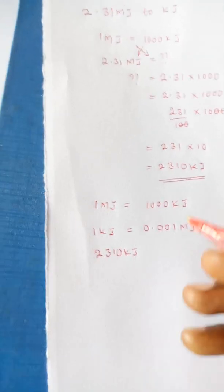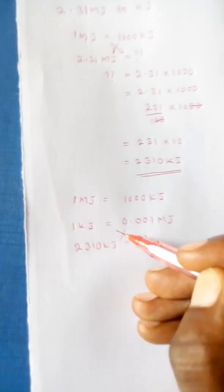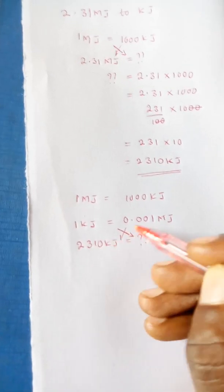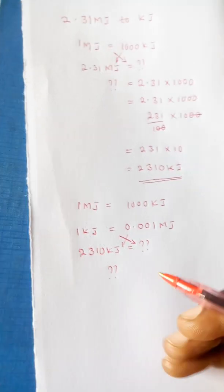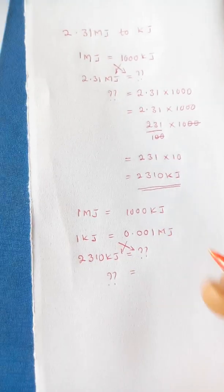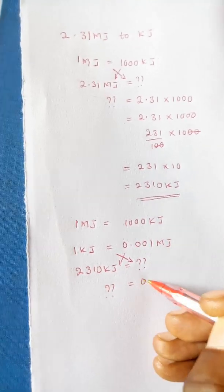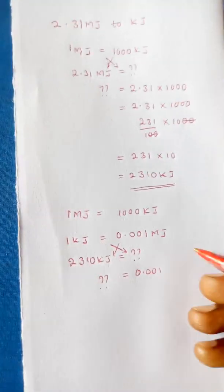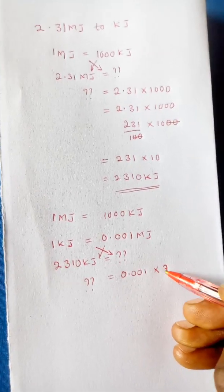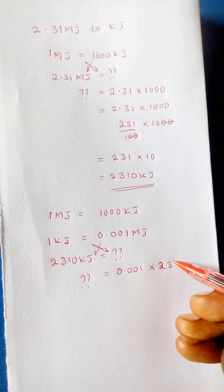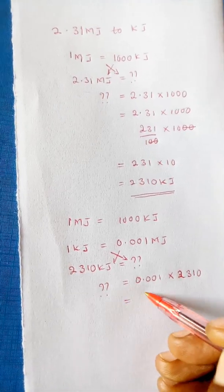Now this will mean that our 2310 kilojoules will be equal to unknown megajoules. So as we cross multiply, this will be multiplied with this one and this with this one. So our unknown megajoules will be 0.001 times 2310.